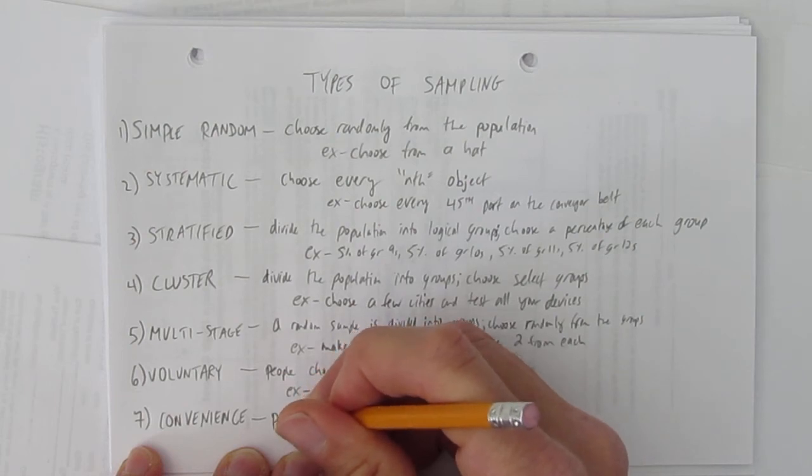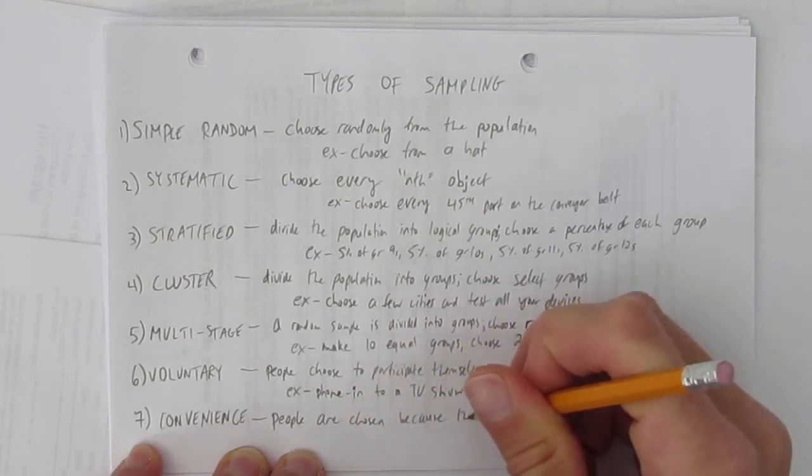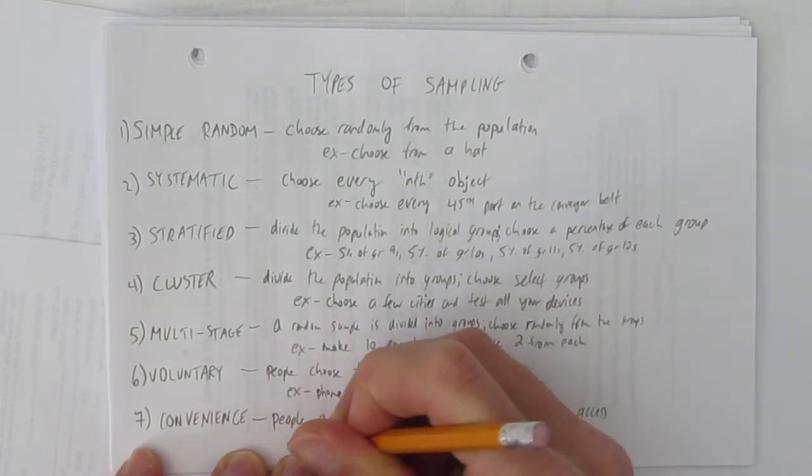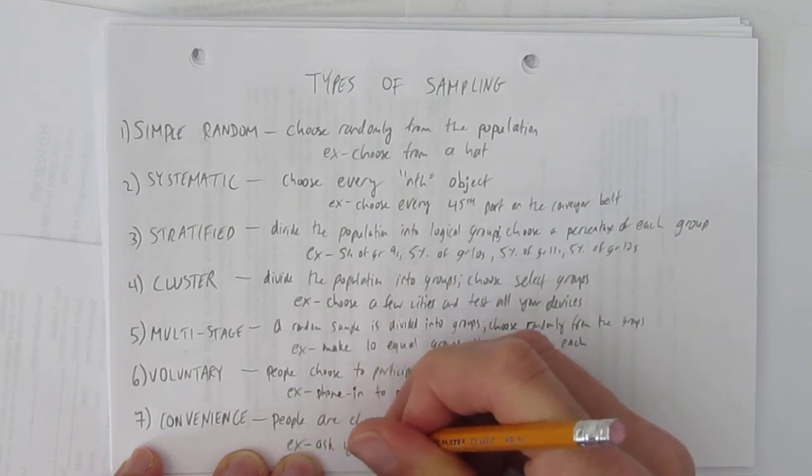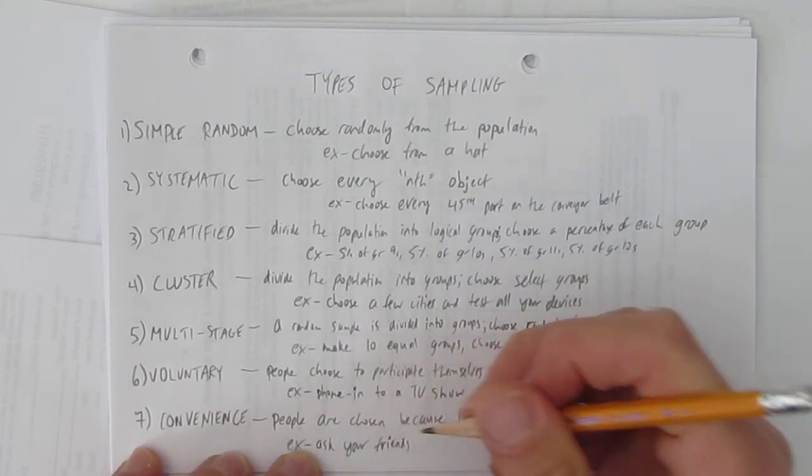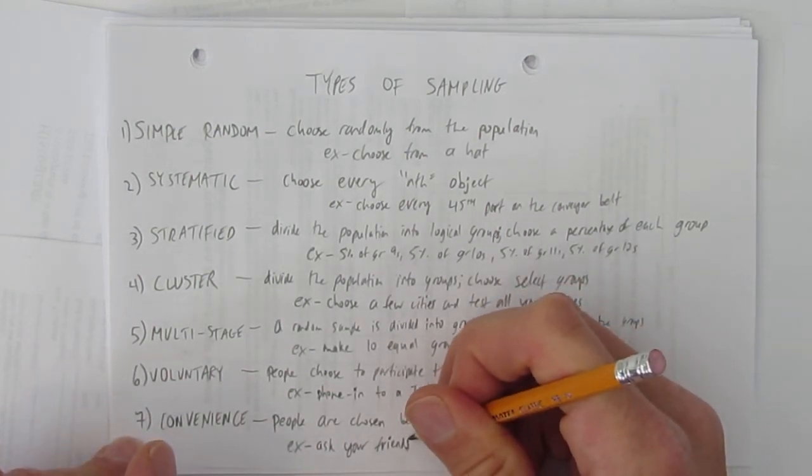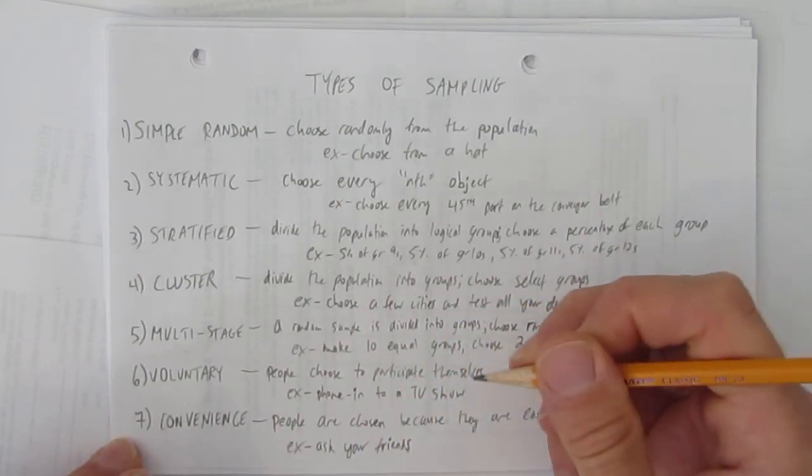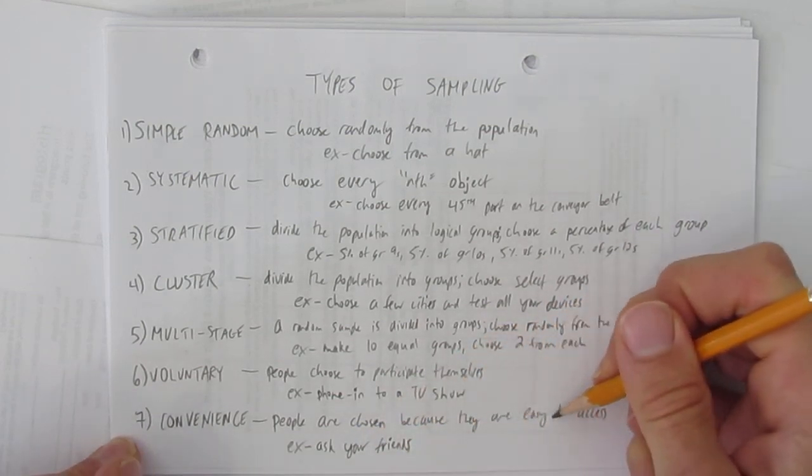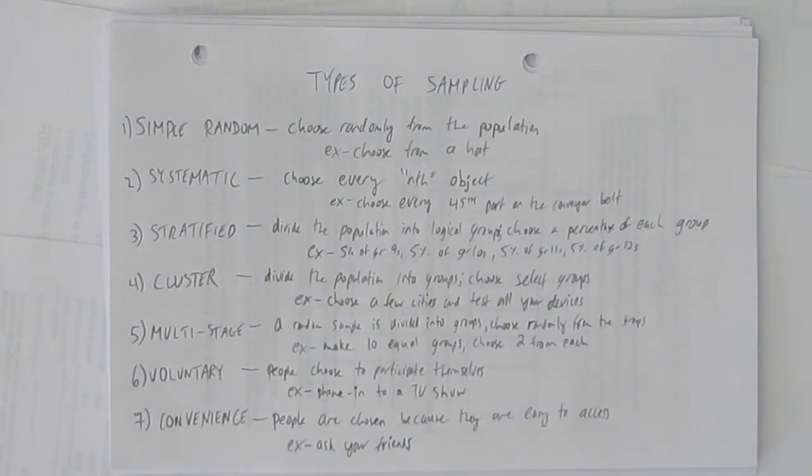With convenience sample, that's where people are chosen because they are easy to access. So for example, the most obvious or striking example of convenience sampling would be to ask your friends. If you wanted to know what the school thought about a certain topic and you only asked your friends, you would for sure get biased because your friends tend to be people who think like you, who act like you, and will hold very similar opinions to you. Some might be different, but you'll get biased because this easy access of those friends, those people tend to have characteristics that are more in common with you and not reflective of the entire population. So those are the seven different types of sampling methods.